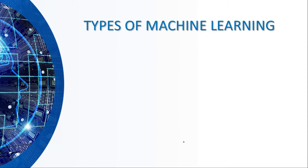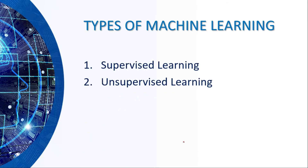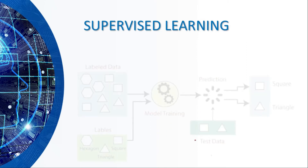There is a lot of scope and many applications of machine learning. Now let's look at the types of machine learning. There are three types: supervised learning, unsupervised learning, and reinforcement learning.